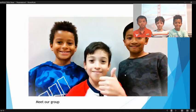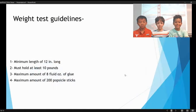Meet our group. Weight Test Guidelines: Our bridge has to be a minimum of 12 inches long and must hold at least 10 pounds. You can use a maximum of 8 fluid ounces of glue and 200 popsicle sticks.